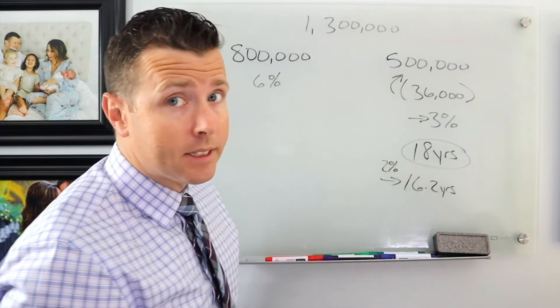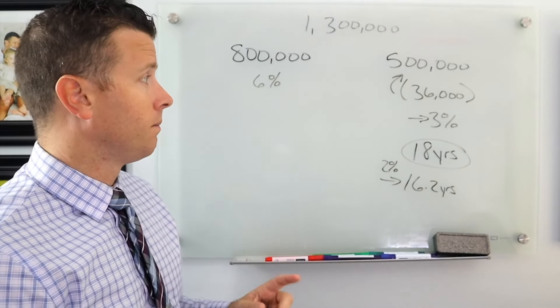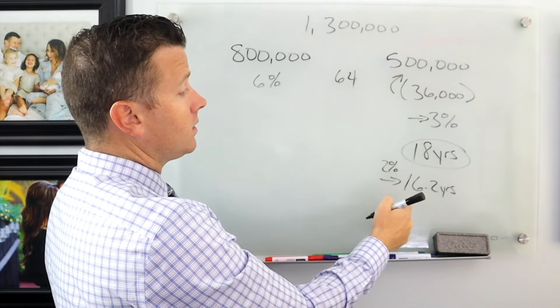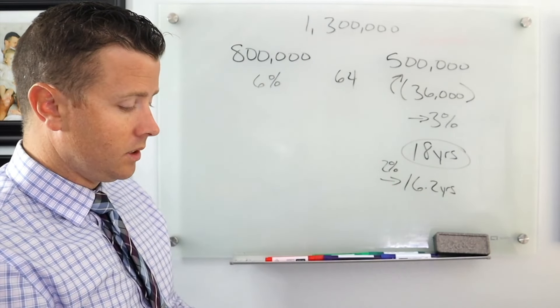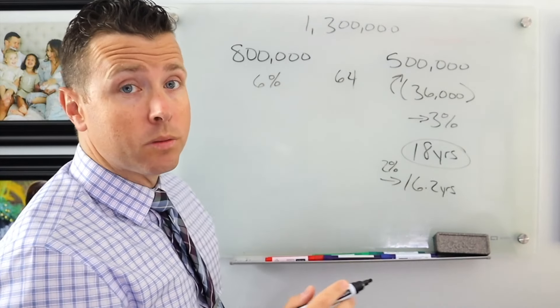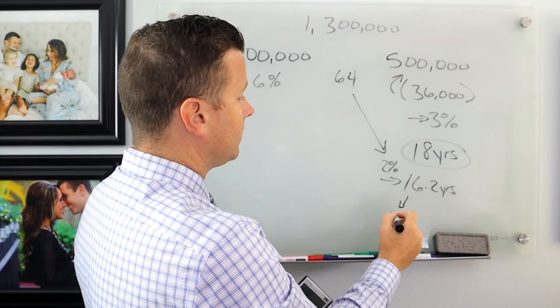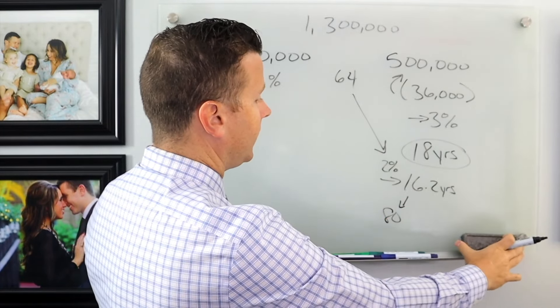Now what I didn't tell you at the onset of this video is this person's 64. So if they're 64 years old, let's go to 16 years because that's 2%. So 64 plus 16, that gets them to 80. So this here gets this gentleman to 80 years old.